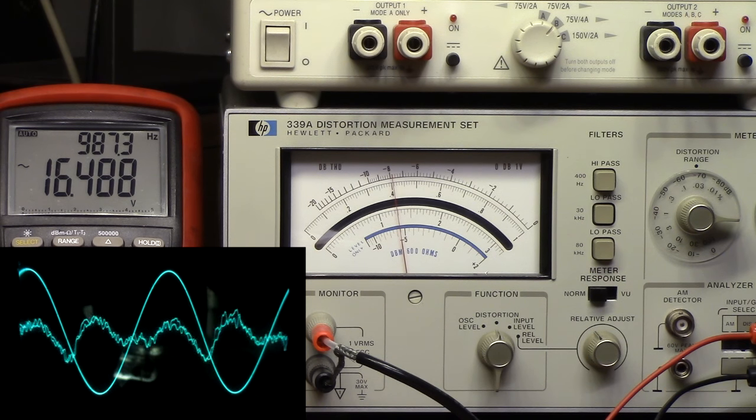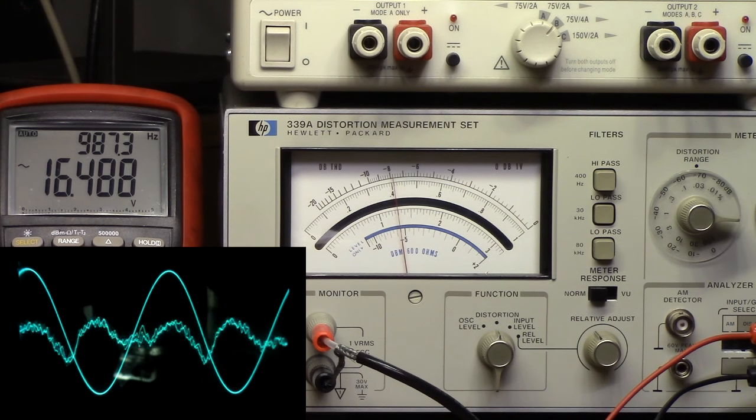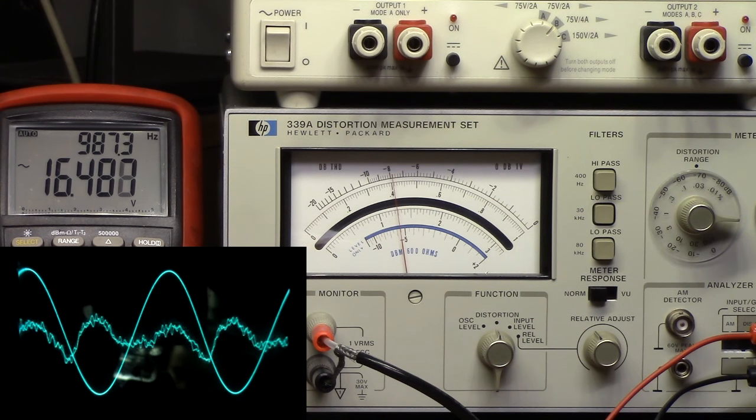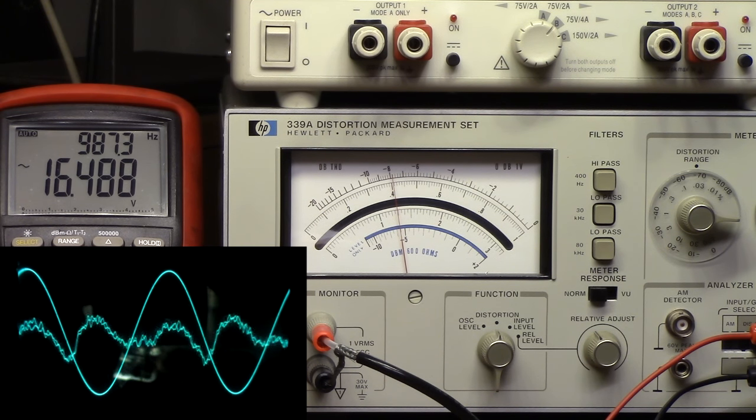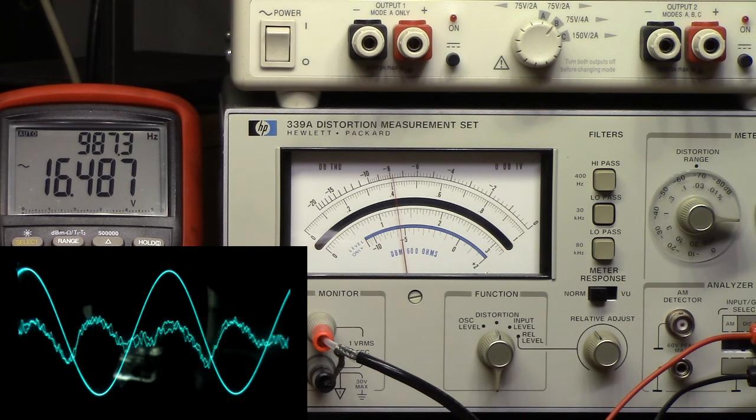So we're rated for 85 watts per channel into 8 ohms at less than 0.1% distortion, and I think it's going to meet that goal. We're going to use a 30kHz low-pass filter, because it's specified for 20Hz to 20kHz, and that usually means that the manufacturer has been using a 20kHz low-pass filter when testing it, so it wouldn't really be fair to actually measure it full bandwidth.